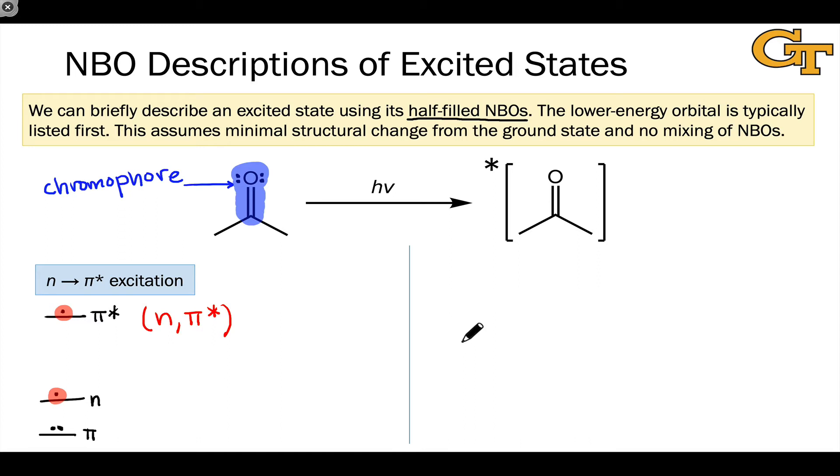There's another possible photoexcitation of the carbonyl group that involves promotion of an electron from the π orbital to the π* orbital. Let's draw out the orbital configuration of that excited state. Two electrons still reside in the n-type orbital, but one electron has been moved from the π orbital to the π* orbital. So the electron configuration of the (π, π*) excited state looks like this.